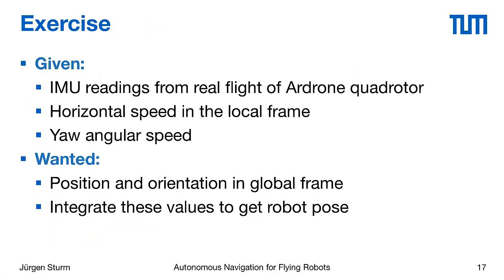This brings us to the next exercise. We recorded flight data from a real flight of a Parrot AR drone quadrotor and extracted IMU readings containing the horizontal speed in x and y direction in the robot's local frame, and the angular speed around its vertical axis. From these three parameters we want to infer the position and orientation of the robot in the global frame at every point in time. Your task is to integrate these values to obtain the robot pose and the trajectory the robot traversed.